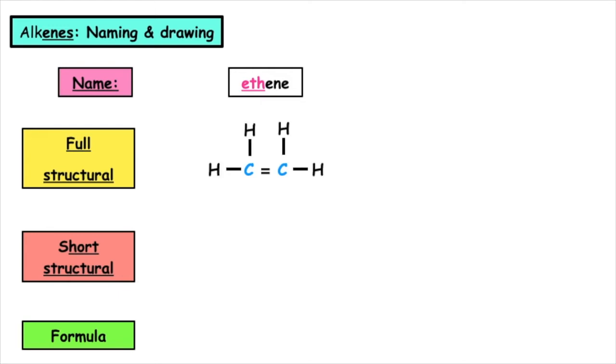If we write the shortened structural, we take each carbon separate. The first carbon is CH2, second carbon is CH2. The molecular formula, we add up the total number of carbons and hydrogens, which would give us C2H4.